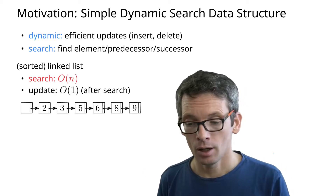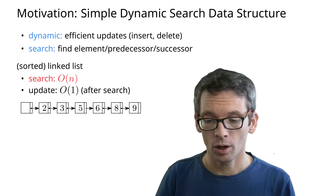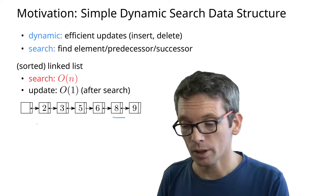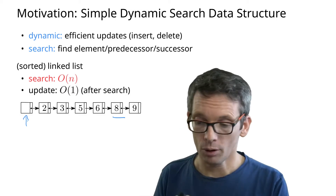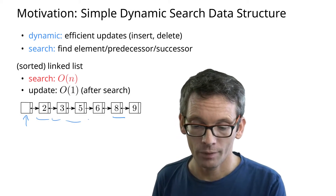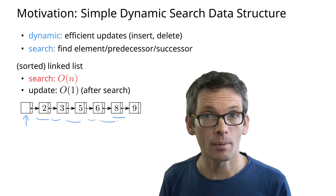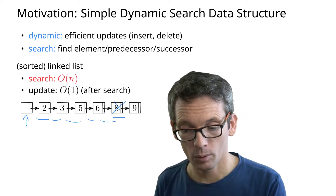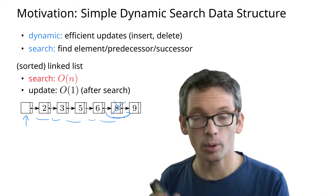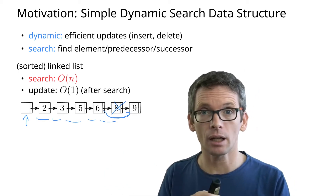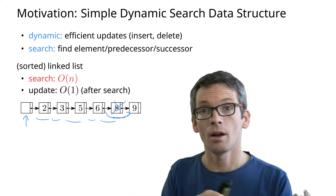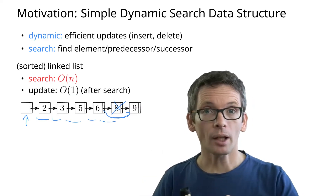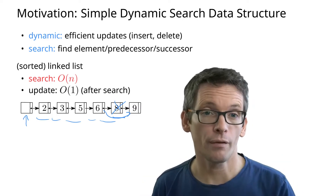So here we have a linked list. If I want to search for the 8, my only option is I start at the head, I follow the next pointers, and that takes linear time. Deleting is easy because I just need to reroute the next pointer from the 6 to the 9, and if I have a doubly linked list also the previous pointer from the 9 to the 6, so that takes constant time. So we can update efficiently but we cannot search efficiently.